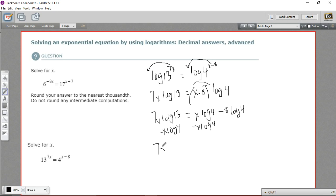On this side we're going to have 7x log 13 and minus x log 4. And over here we're just left with, after this goes away, we're left with negative 8 log 4. Now we can factor out an x. When we do that, we're left with 7 log 13 minus log 4.